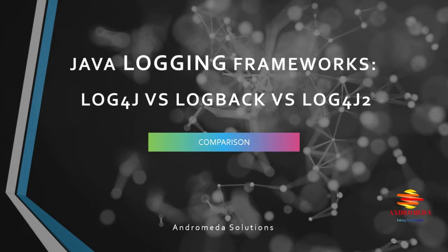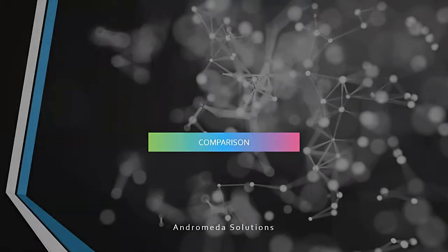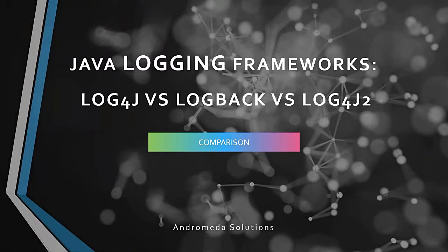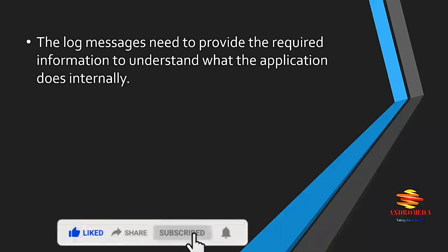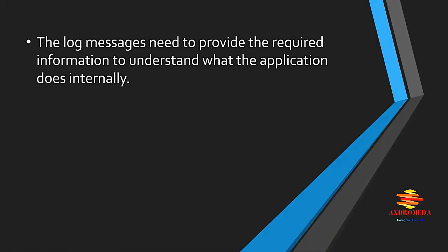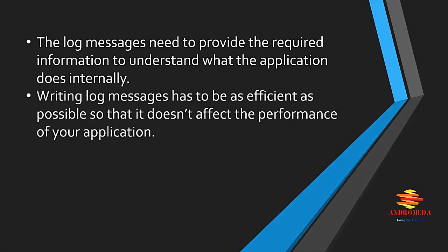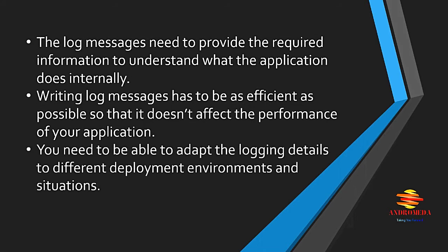Let's compare today logging frameworks: Log4j versus Logback versus Log4j2. Good logging requires three things: the log messages need to provide the required information to understand what the application does internally; writing log messages has to be as efficient as possible so that it doesn't affect the performance of your application; and you need to be able to adapt the logging details to different deployment environments and situations.